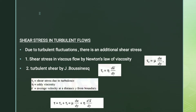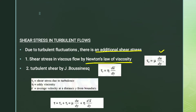This is the equation for Newton's law of viscosity: tau is equal to mu into du divided by dy. According to Newton's law of viscosity, in the case of turbulent flow, there is an additional form of shear stress distribution.